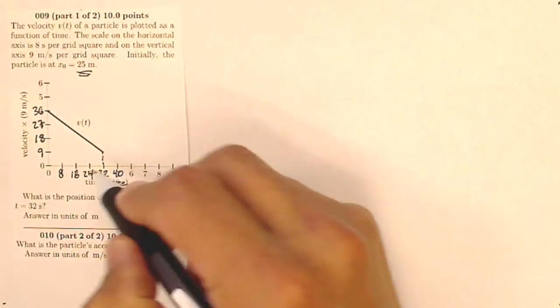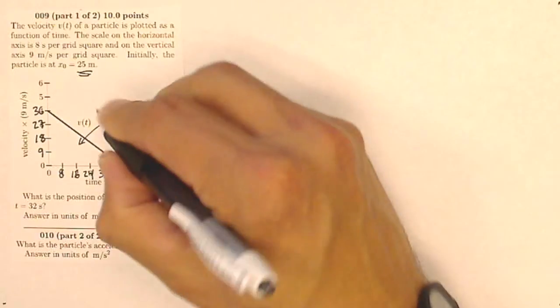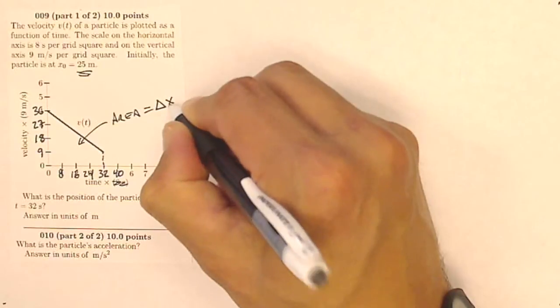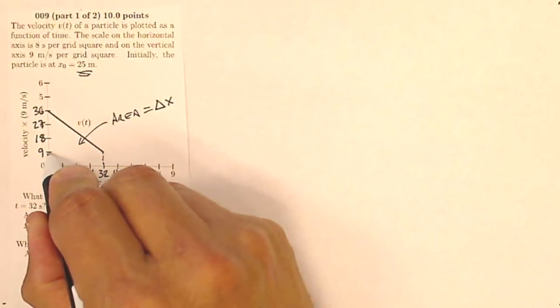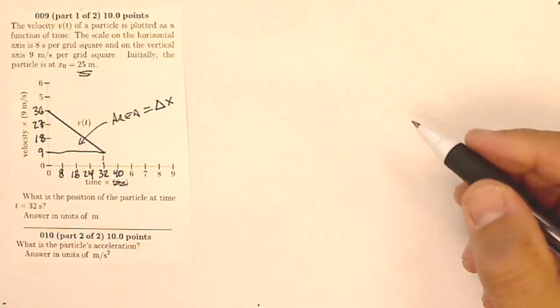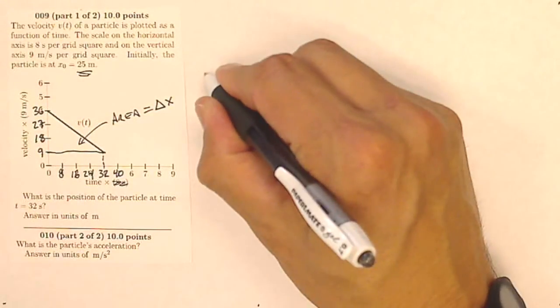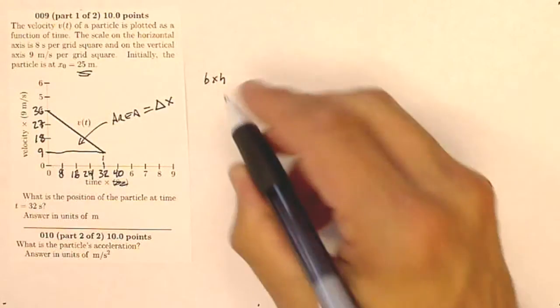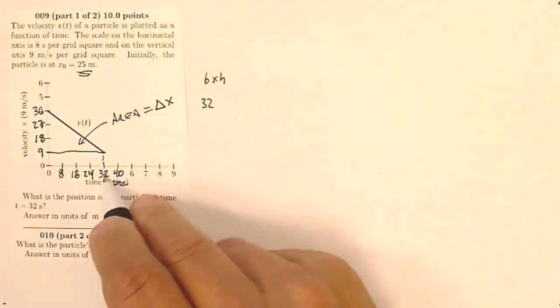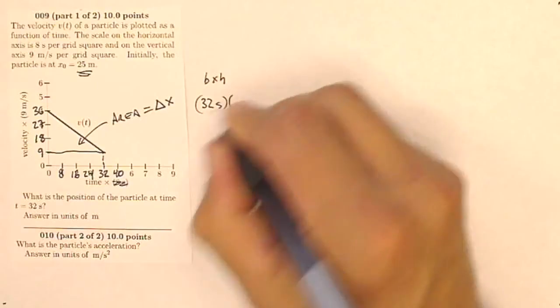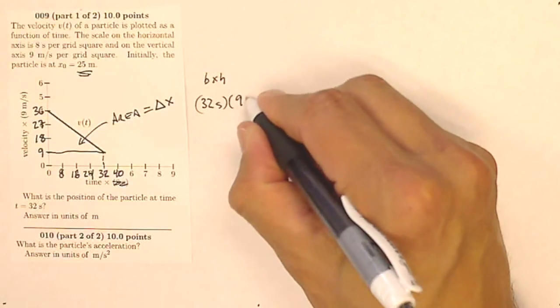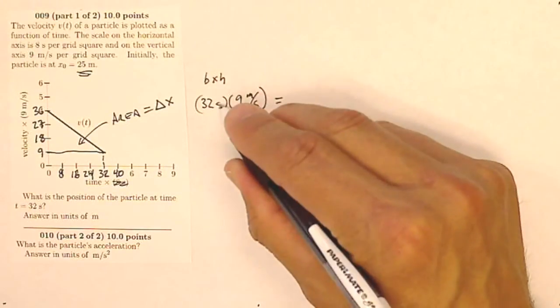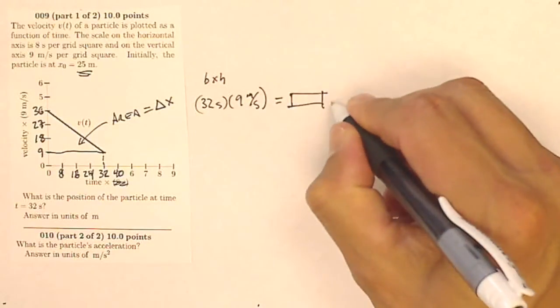Well, one way to solve this is that the area under a velocity time graph, this area between the line and the axis is my change in position. So the way I figure out that area is I split it into a rectangle and a triangle. My rectangle area is going to be base times height. So I've got a base of 32 and a height of 9. So that's going to be 32 seconds times 9 meters per second. And when I multiply that out, my units are going to be in meters because seconds and seconds are going to cancel out. So that's going to give me some number of meters.